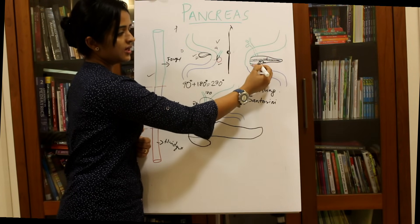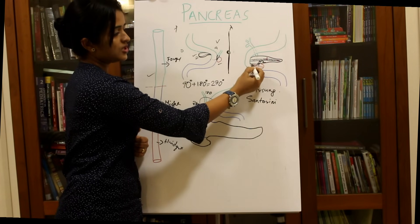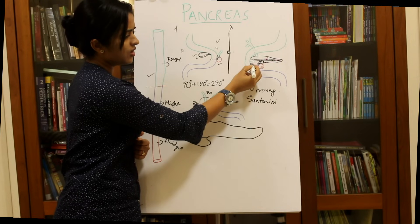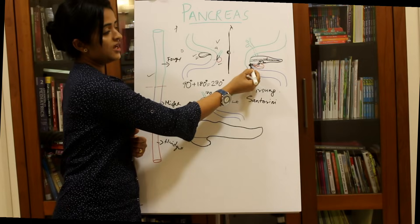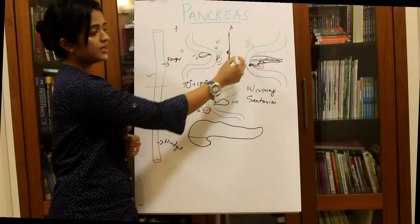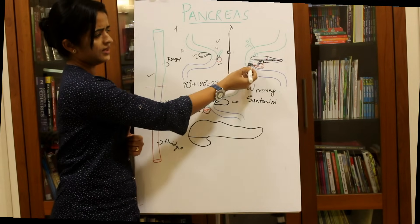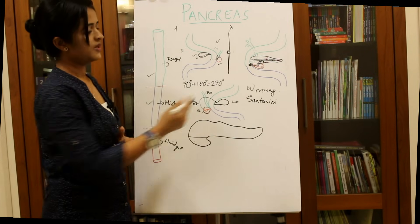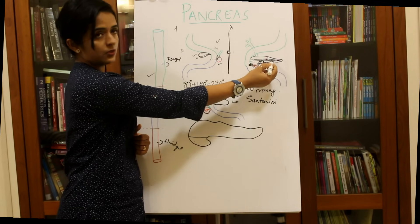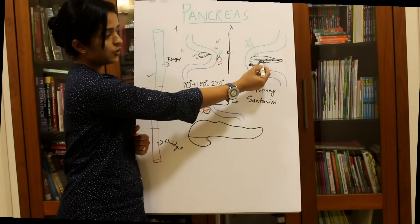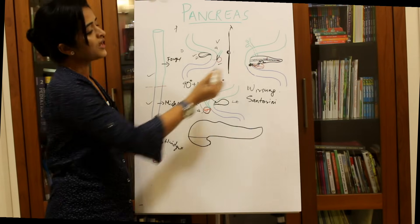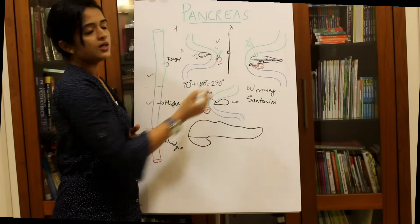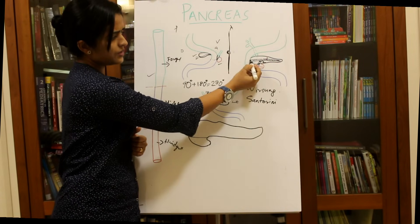The first source is the distal portion of the dorsal pancreatic bud's duct. The second source is the oblique communication between the dorsal and ventral ducts. The third source is the proximal portion of the ventral pancreatic bud's duct along with a small portion of the primitive bile duct. These open at the major duodenal papilla, which is seen in the second part of the duodenum, exactly at the junction of foregut and midgut.